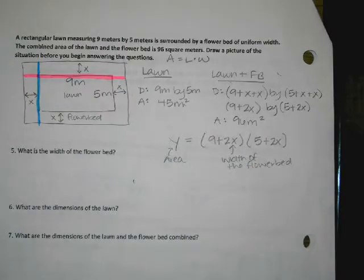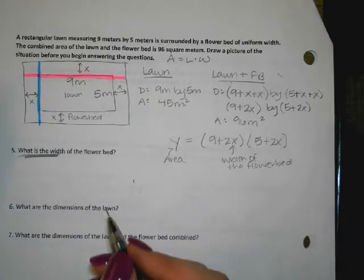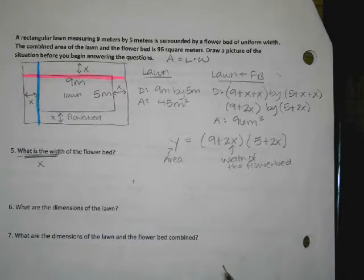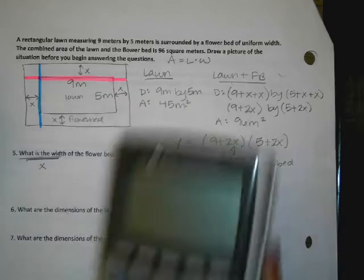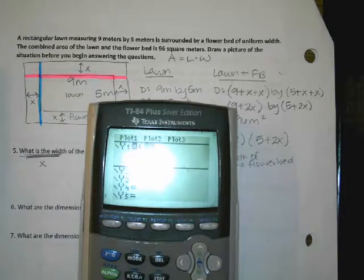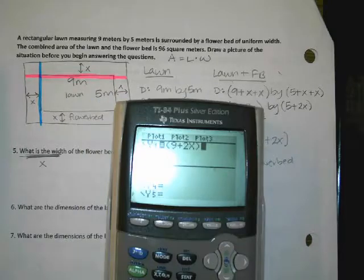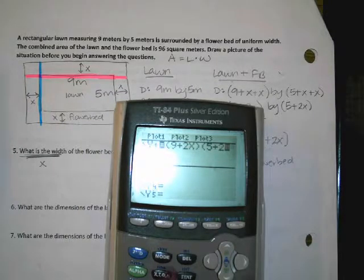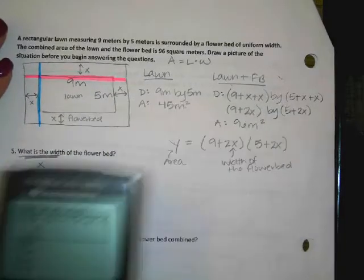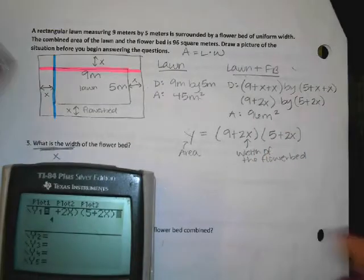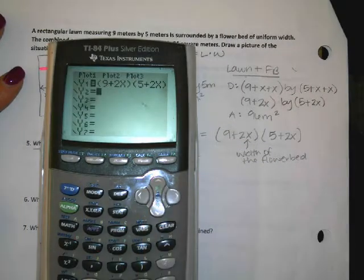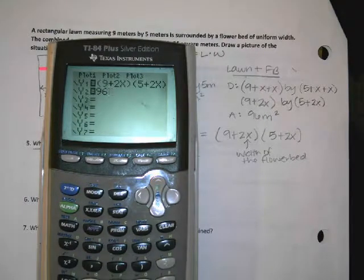So the trick here is the first question says, what is the width of the flower bed? So what letter are they asking us to solve for? x. Now if they gave us or if they're asking us to solve for x, that means they gave us a y that we could use to figure it out. So what I'm going to do is I'm going to go ahead and start typing this in so I don't get overwhelmed with everything. I've got parentheses, nine plus two x, parentheses, and then another set of parentheses, five plus two x. So you do not have to multiply it out. Your calculator can handle it the way that it's written already. And then I know this area right here, this 96 meters squared, that is a y value. That's an area. So I'm going to go down to y two and put 96.